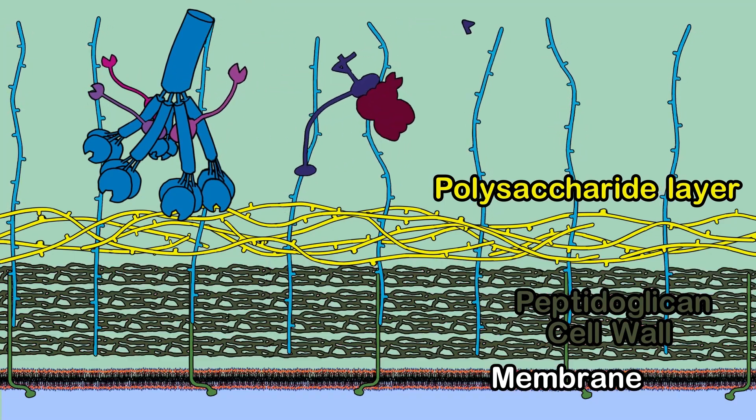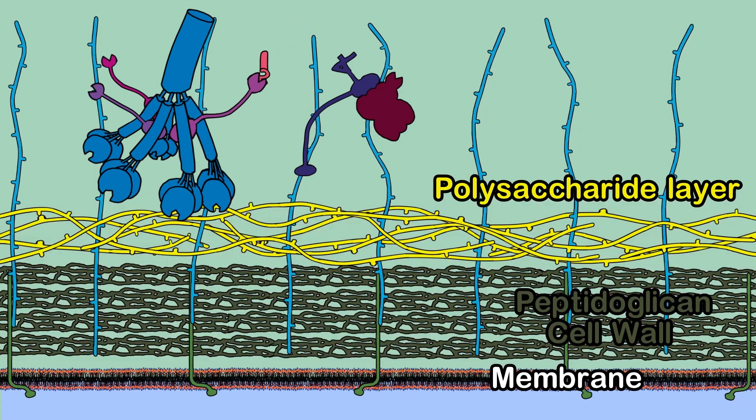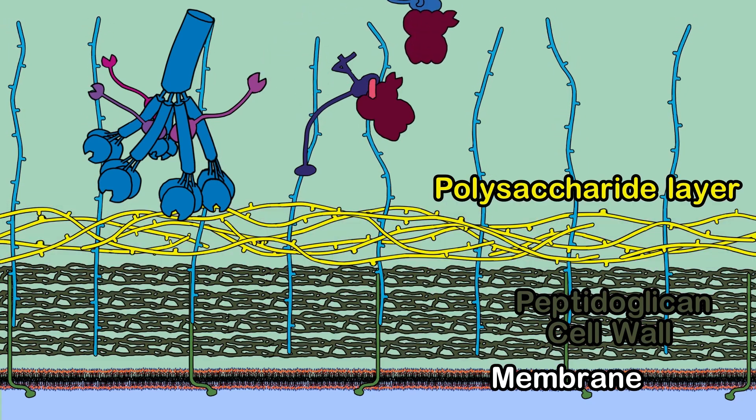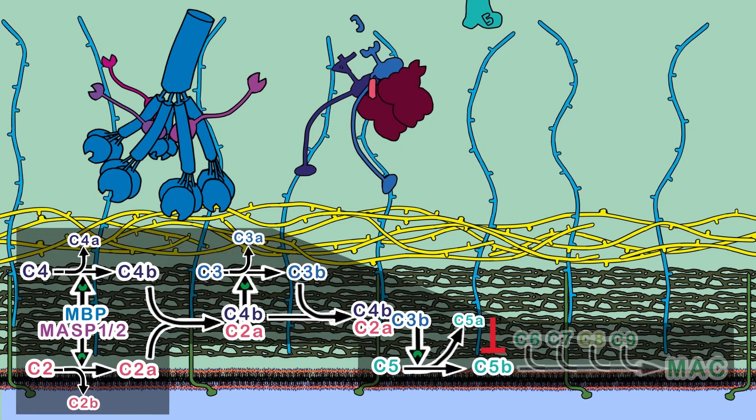but a thick peptidoglycan layer and a slimy polysaccharide layer. These two layers make the bacteria almost immune to components 5B.